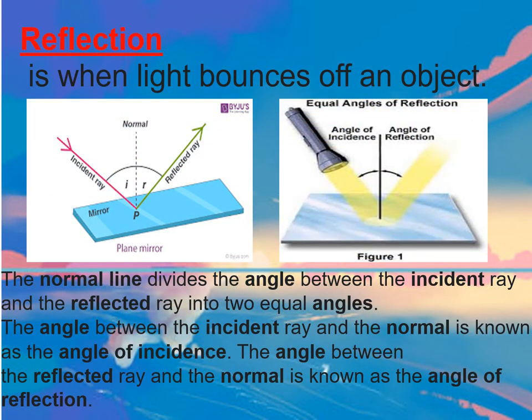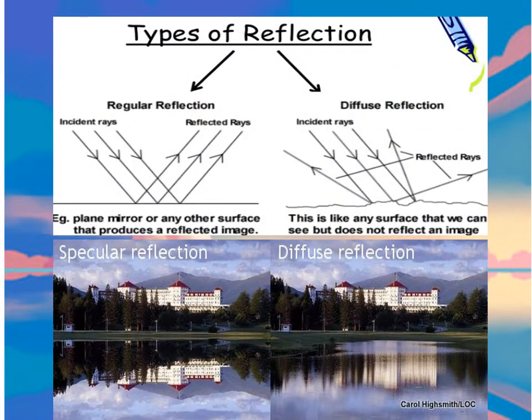What is an incident ray? An incident ray is the ray of light approaching the mirror, represented by an arrow. As you notice, the incident ray is what is absorbed by the mirror. Then the reflected ray is the light that leaves the mirror, presented by an arrow pointing away from the mirror. So the incident ray goes in, and the reflected ray comes out.